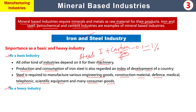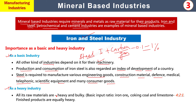Iron and Steel industry کو heavy industry بھی کہلاتی ہے کیونکہ اس کے raw materials جیسے iron ore، cooking coal اور limestone سب heavy اور bulky ہیں۔ Iron ore میں cooking coal اور limestone ملا کے blast furnace میں ڈالا جاتا ہے تب impurities الگ ہوتی ہیں اور iron الگ ہو جاتا ہے۔ ان تینوں کا ratio 4:2:1 کا ہے۔ Finished product بھی bulky ہوتا ہے۔